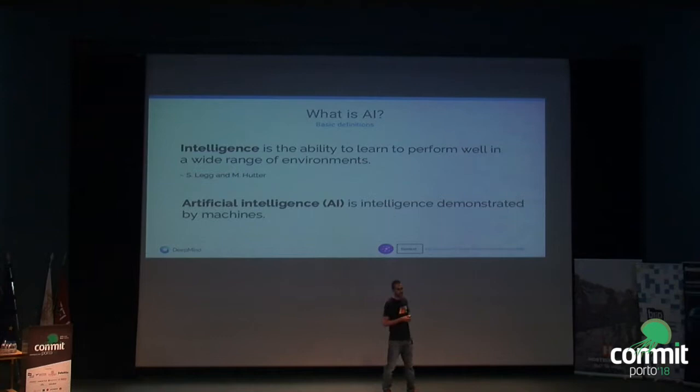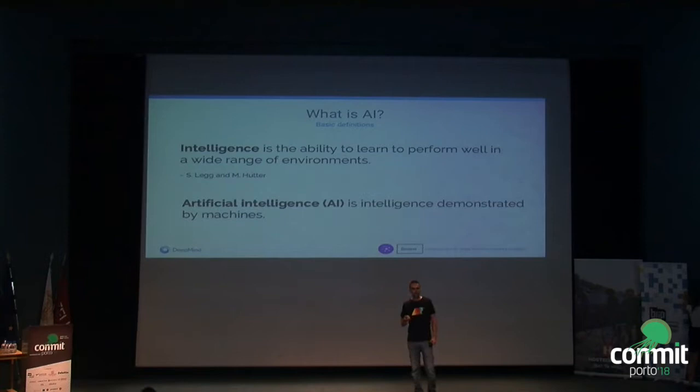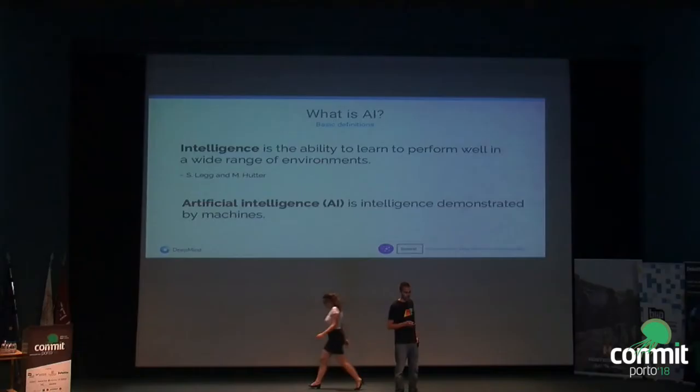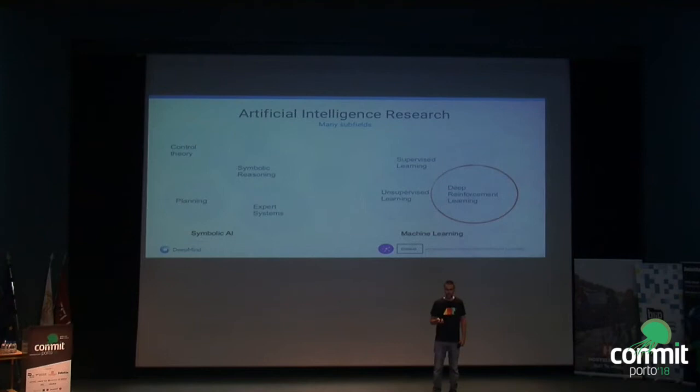If I'm talking about AI, it's maybe good to start by explaining what I mean by intelligence. The definition I like is the ability to learn to perform well in a wide range of environments. Artificial intelligence is just this property demonstrated by machines rather than humans or other animals that are also very intelligent. Why am I talking about deep reinforcement learning? There are many other fields of research in AI.